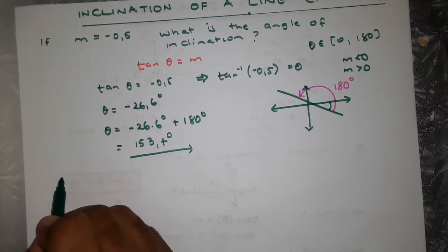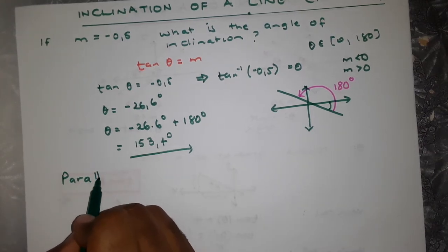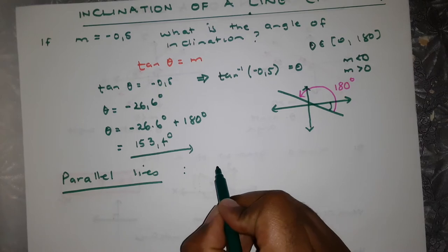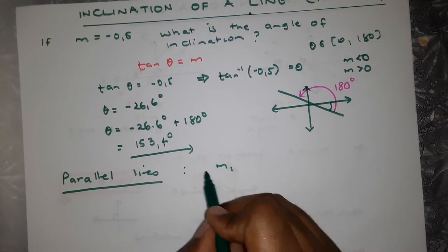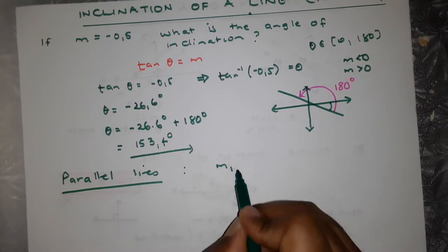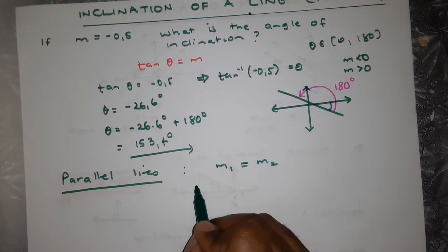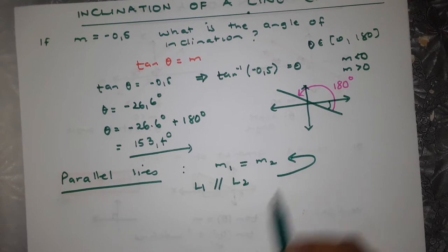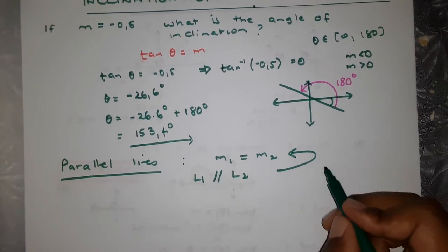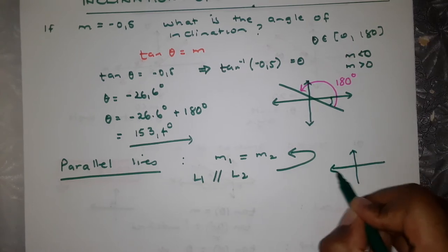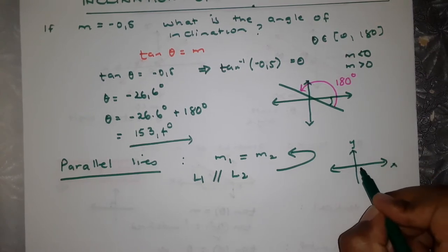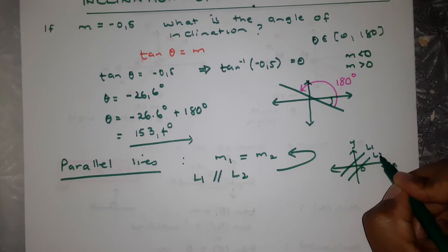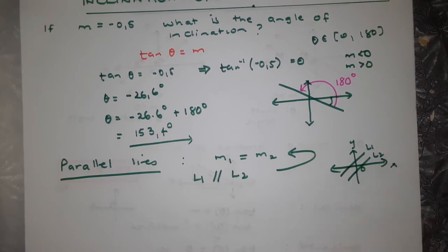Now let's look at parallel lines. You know that the gradient of parallel lines is equal. So if you've got line L1 which is parallel to line L2, their gradients will be equal. If we draw these two lines on the coordinate plane, the gradient of L1 and L2 will be the same.